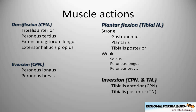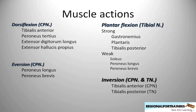So overall: dorsiflexion at the ankle is mainly performed by tibialis anterior, supplied by the common peroneal nerve. Eversion is also performed by the common peroneal nerve, as it supplies peroneus longus and brevis — the main everters. Plantar flexion is a function of the tibial nerve, mainly caused by plantaris, gastrocnemius, and tibialis posterior. Whereas inversion is performed by both tibialis anterior and tibialis posterior — tibialis anterior being supplied by the common peroneal nerve and tibialis posterior by the tibial nerve.